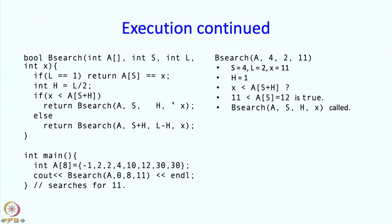So if it is true then we are going to make this call. In this call S is 4, H is 1 and X is 11. So we are now going to start another recursive call, so again we start from this point. And because of the argument list, S is going to get 4, L is going to get 1, and X is going to be 11.